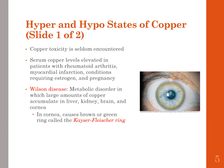Elevated serum copper levels are found in patients with rheumatoid arthritis, those who have had a myocardial infarction, and conditions requiring estrogen such as menopause, hormonal disruptions, or pregnancy. Wilson's disease is a metabolic disorder in which large amounts of copper accumulate in the liver, kidney, brain, and cornea, causing a brown or green ring around the eye called the Kayser-Fleischer ring.